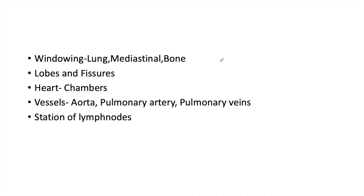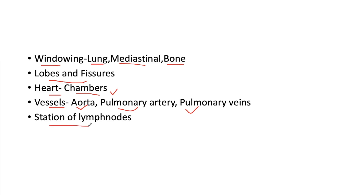In this video, I will be discussing the CT anatomy of the chest. I will be discussing about windows — how to differentiate lung window, mediastinal window, and bone window, and what are their uses. How to differentiate different lobes and fissures of the lungs, how to identify the chambers of the heart, and how to identify the different vessels in the mediastinum: aorta, pulmonary artery, and the pulmonary veins. We will also discuss the common lymph node stations of the mediastinum.